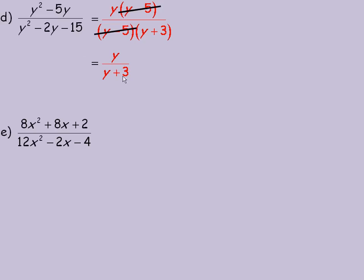So this is what that simplifies to. The restrictions — I would look at the two factors, the one that's still in the denominator and the one that was divided out. It's y minus 5, so 5 is one restriction. The other is negative 3, since negative 3 plus 3 would make that factor 0. So negative 3 is the other value that this function is not defined for.